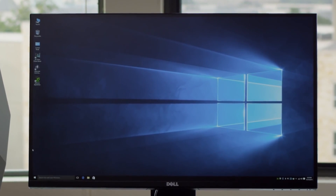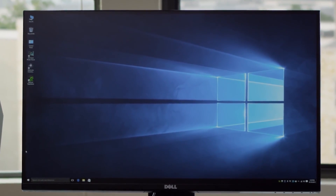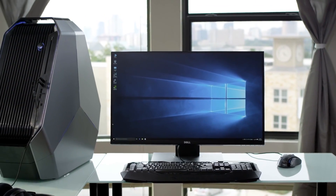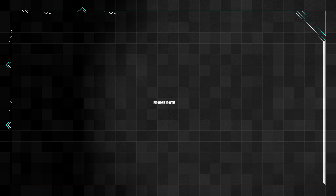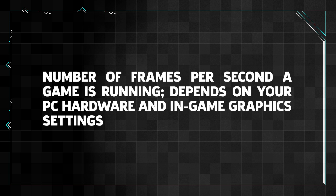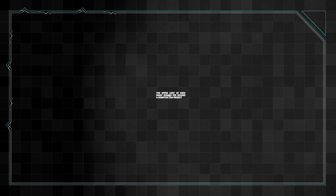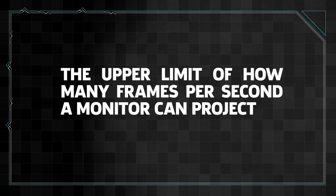That all might be a lot to take in at once, so here's a quick recap of everything we've gone over. Frame Rate: the number of frames per second a game is running, depends on your PC hardware and in-game graphics settings. Refresh Rate: the upper limit of how many frames per second a monitor can project.